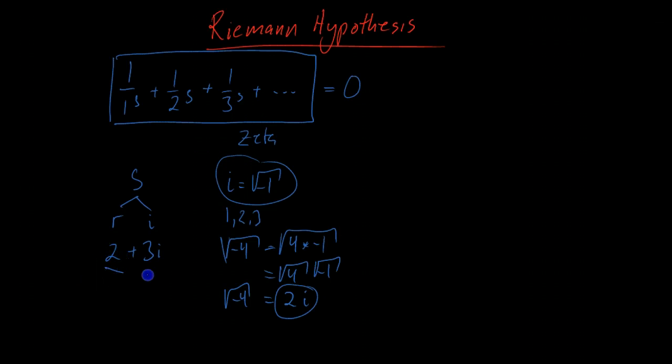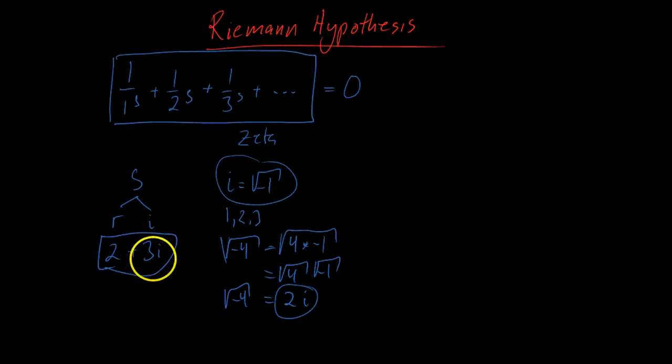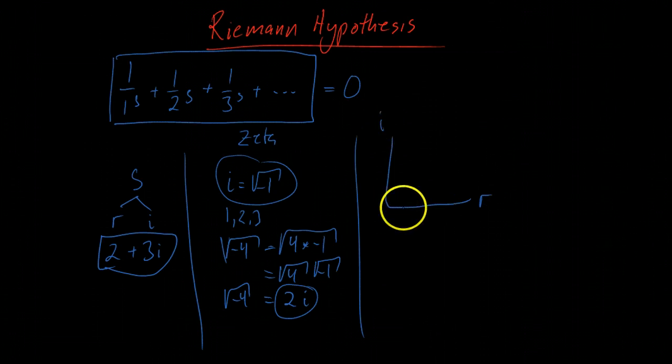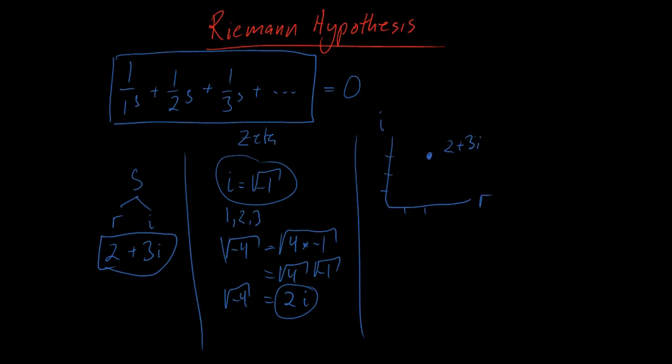It's just a symbol we invented in order to solve problems. So we have a complex number which consists of a real part — say 2 — and an imaginary part — say 3i — written as 2 plus 3i. We can plot this: on a real axis going 1, 2, and an imaginary axis going 1, 2, 3 — that point is where we have 2 plus 3i.